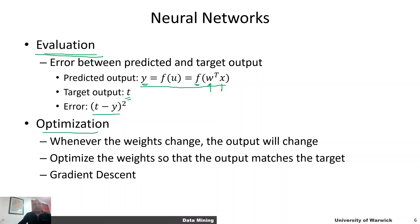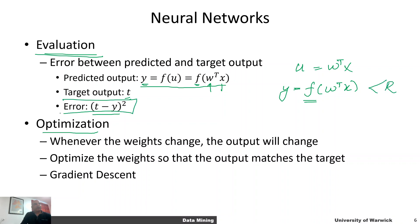To recap: we first compute the net input u = w^T x, then we apply an activation function f to generate the output f(u) — this is the representation component. Then for a given example x with known target t, we compute the error between the output and the target — this is the evaluation component. Finally, we minimize the difference between the target and what the neuron is producing by optimizing with respect to the weights — and that is how a single neuron is trained.